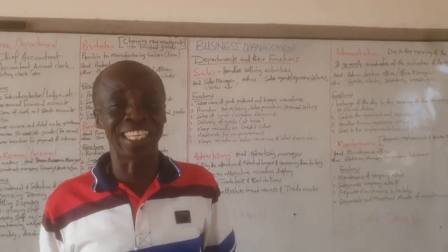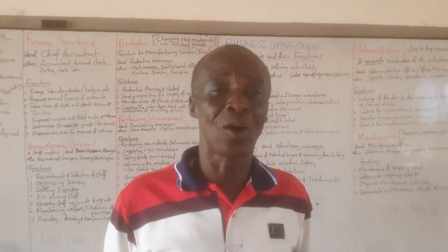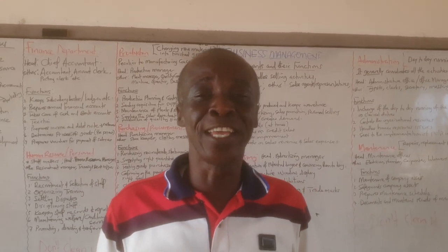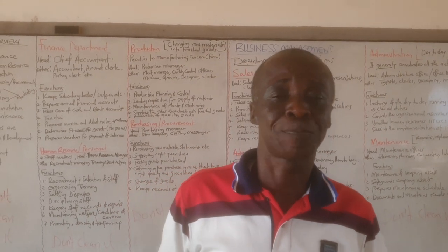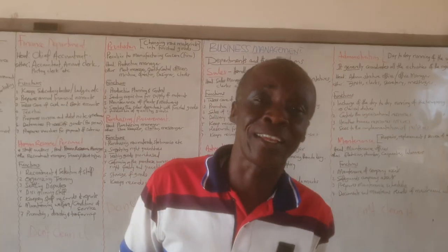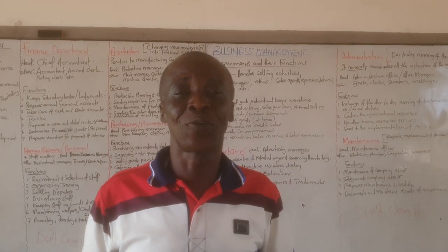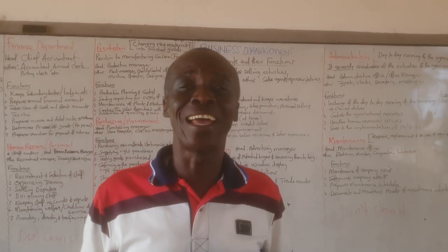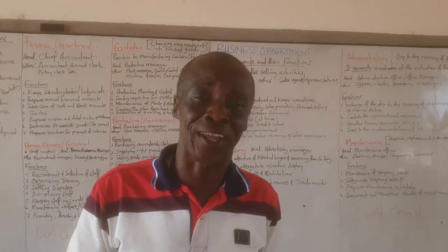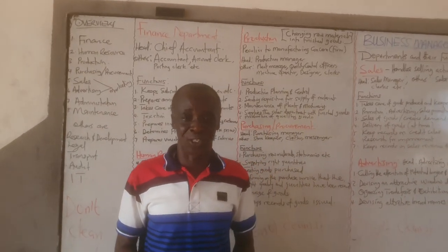Remember we have done departmentation, and departmentation results in departments. Each department has its own functions, and the number or types of departments in a particular organization depend on the nature of the organization and its size. For example, a sole proprietor may not have any department at all, while some organizations may have only two, three, four, or five departments.